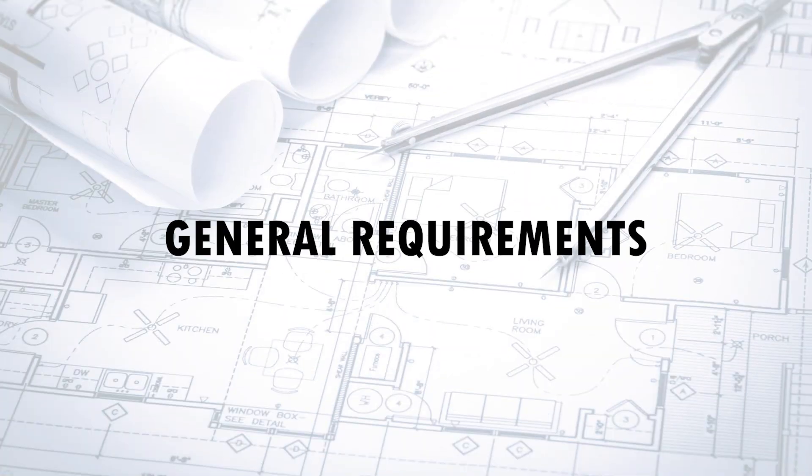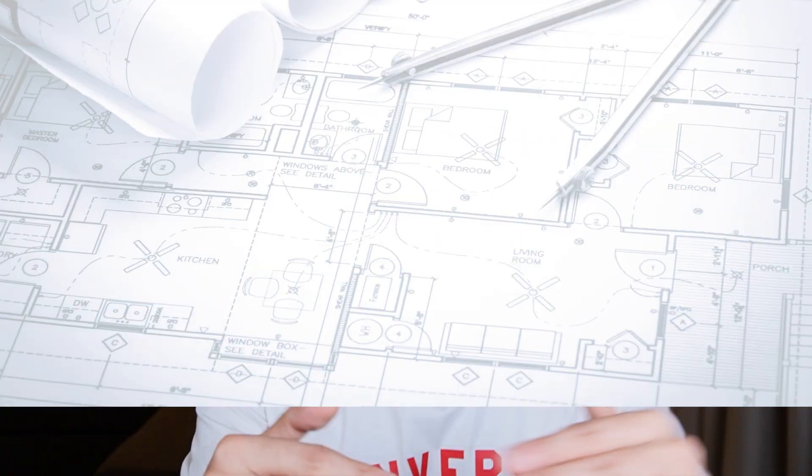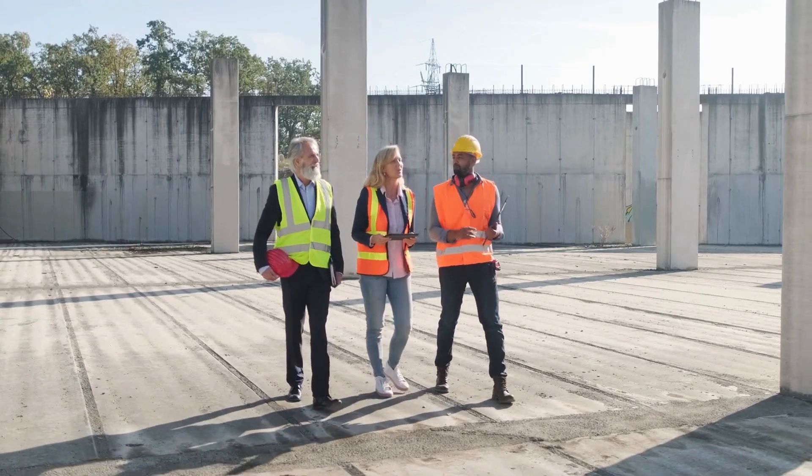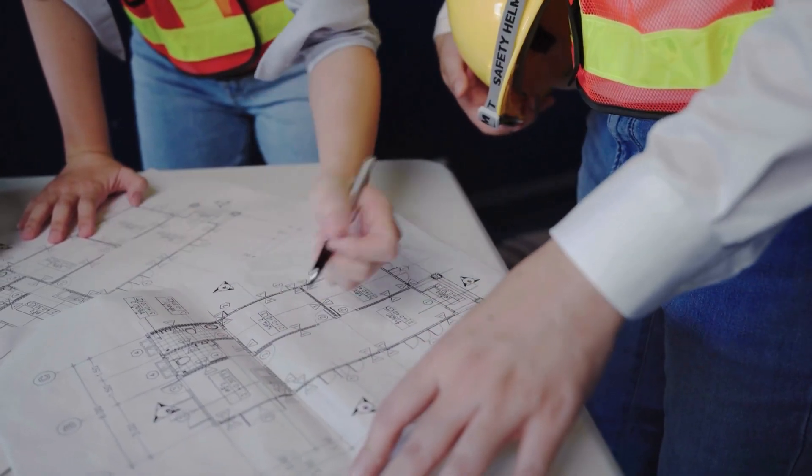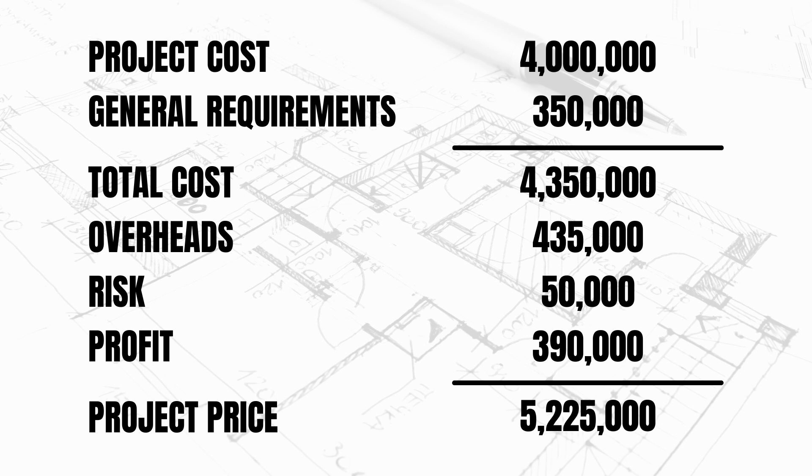When estimating the cost, don't forget the general requirements — these are general items that support the execution of your project, such as project supervision, site office, site fencing, sign board, access roads, water, and electricity. These are called general items and you should allow for them in your cost estimate as well. Once you have estimated everything — your defined scope, measured quantities, and general requirements — you now have the total cost of the project.